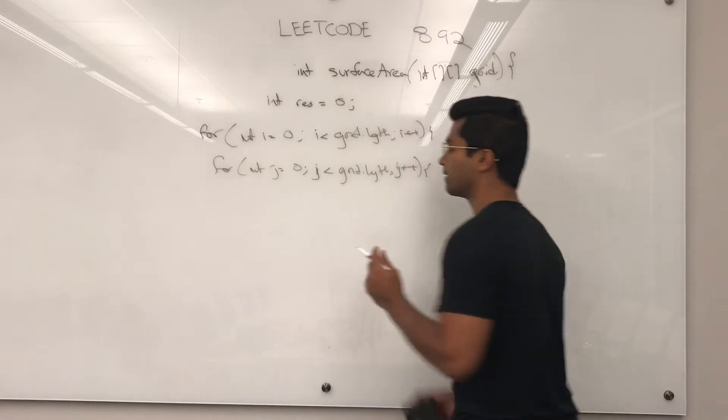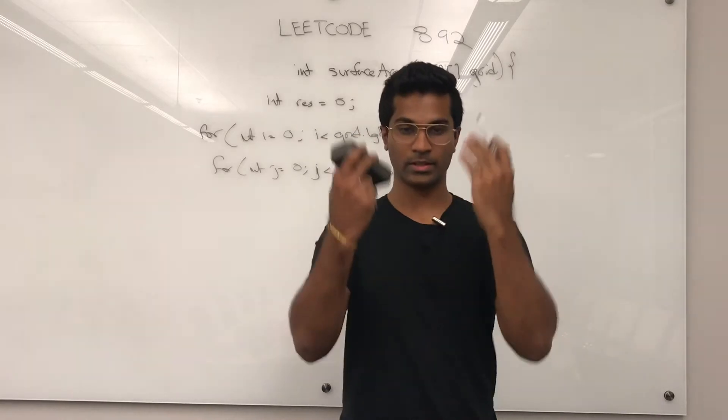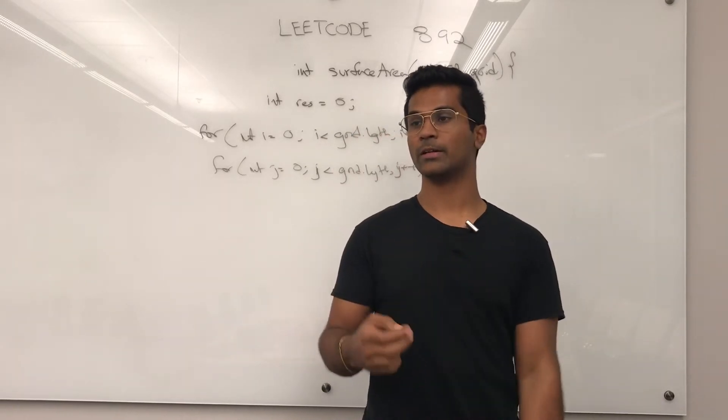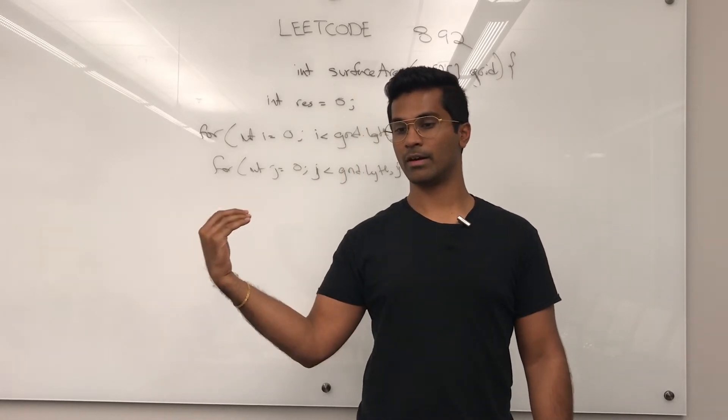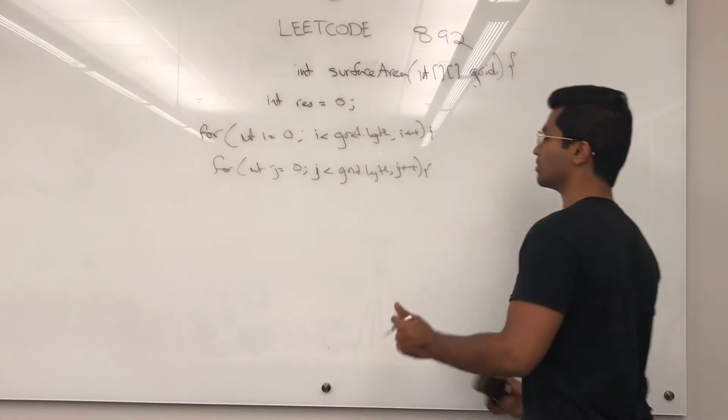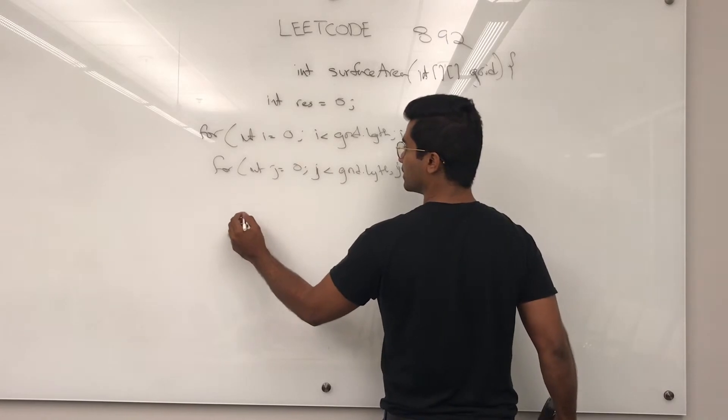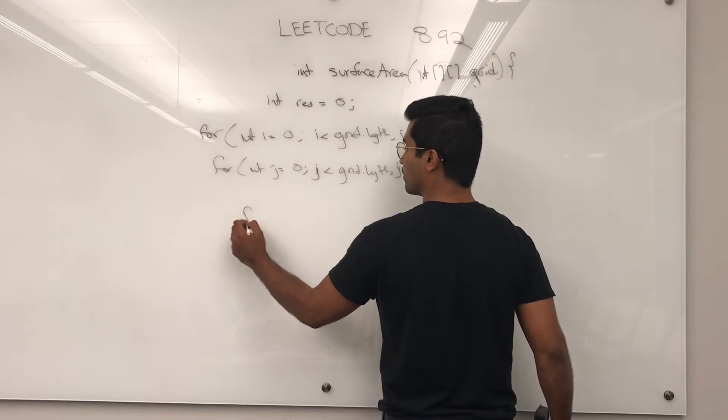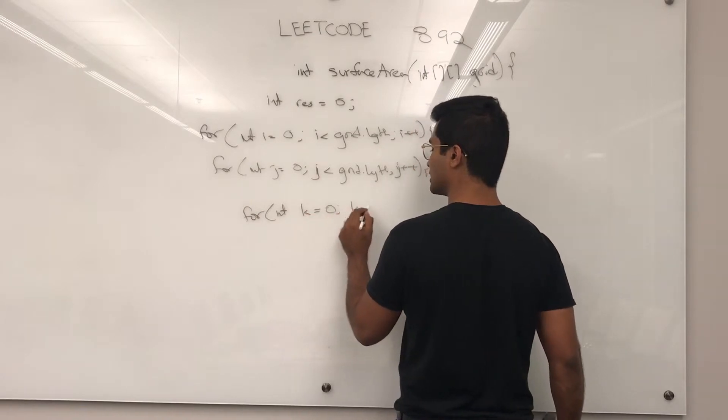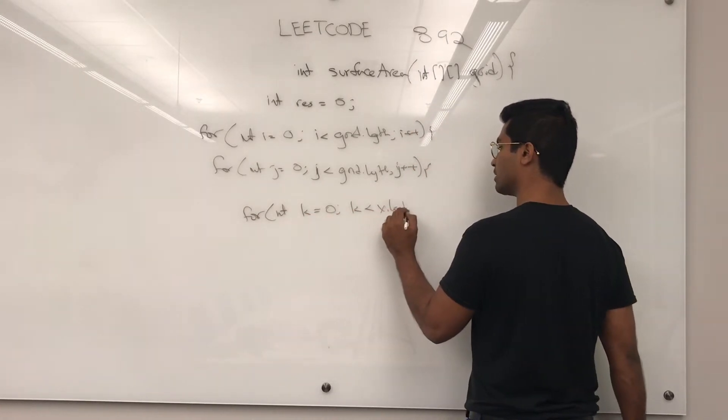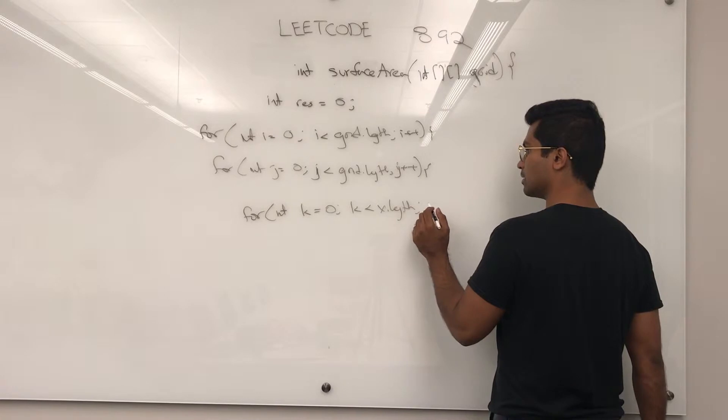When we, now that we're, so for example, say I'm a grid right now, I'm a block. If there's something next to me, I need to subtract my height and that one. So, for int k equals 0, k is less than x.length, k++.